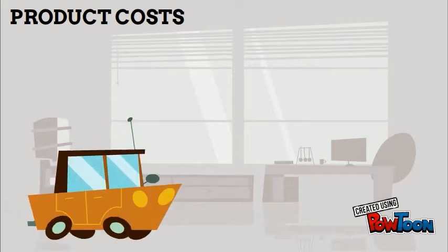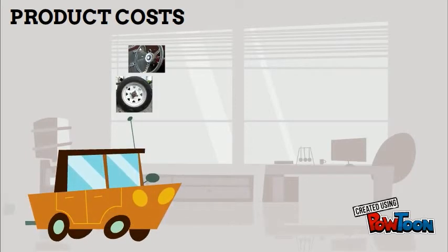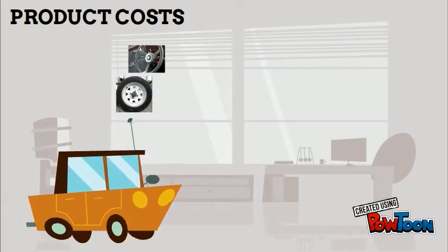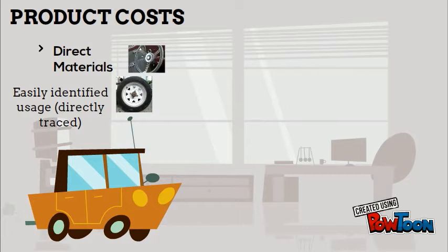Let's think about creating this car here. If we're going to build a car, we will need all the various parts that go in it. These parts would be considered direct materials because they are easily identified and traceable to the final product, meaning we know exactly how much of the materials we need for each product that we produce.